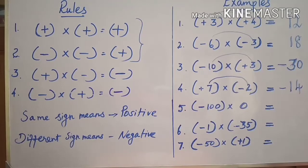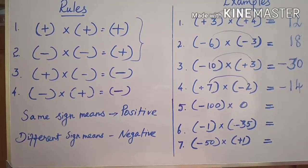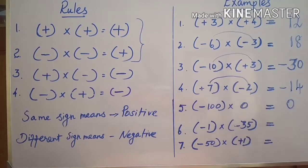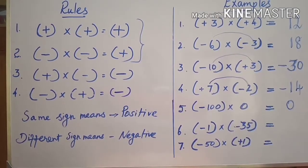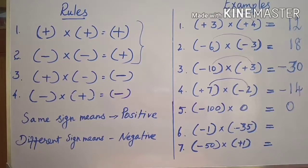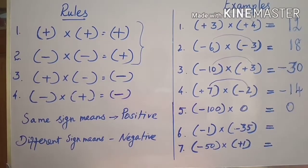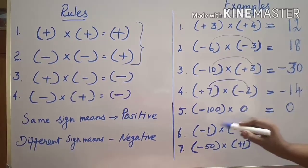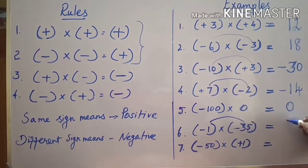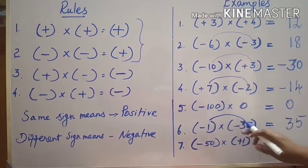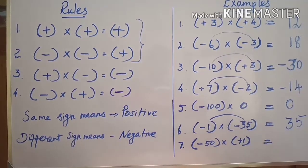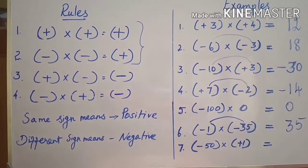Next: minus one hundred into zero. A number multiplied by zero always gives zero. Zero is neither negative nor positive, so don't worry about the symbol. Sixth example: minus one into minus thirty-five. A number multiplied by one gives the same number — one into thirty-five is thirty-five. Both signs are the same (both negative), so the answer is positive: thirty-five.